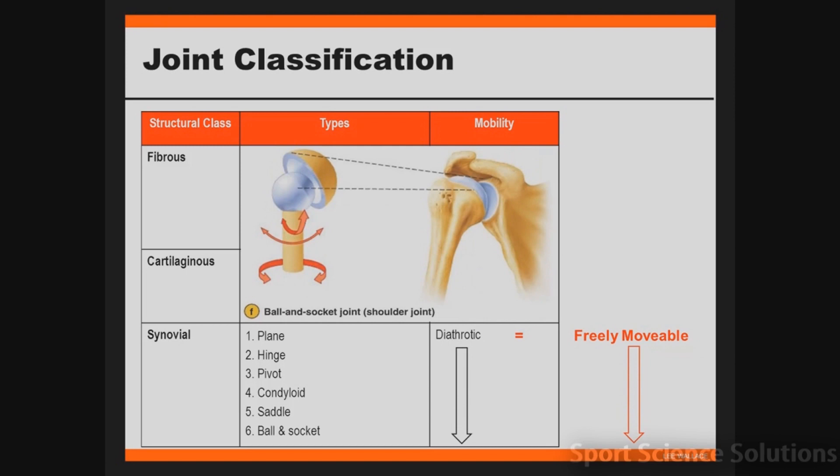The sixth type of synovial joint is called a ball and socket joint. This is where we have a round or spherical head on a bone fitting inside an opposing spherical basin-type structure on an opposing bone.